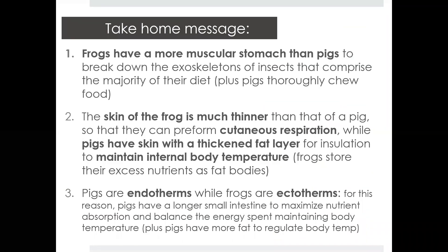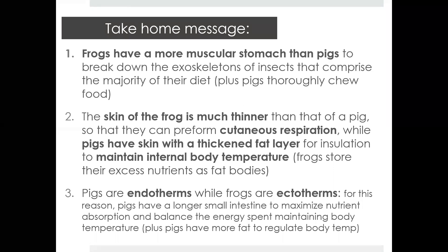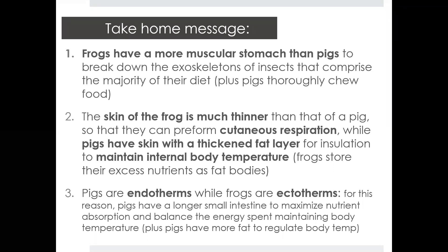Our take-home message comparing the frog and pig systems: frogs have a more muscular stomach than pigs to help break down the exoskeletons of insects, which makes up the majority of their diet. The skin of frogs is much thinner than that of a pig — that thin skin allows them to perform cutaneous respiration as an alternate breathing pattern. Pigs can't breathe through their skin, so they rely entirely on breathing through their lungs and must maintain their own body temperature.